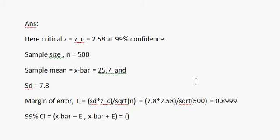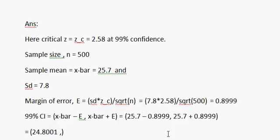Putting the value of x-bar and E, we get x-bar is 25.7 minus 0.8999, 25.7 plus 0.8999, which equals 24.8001, 26.5999. Here is the answer.